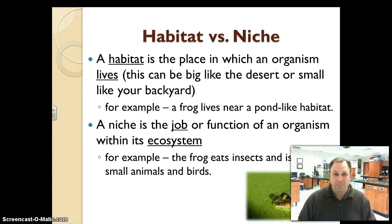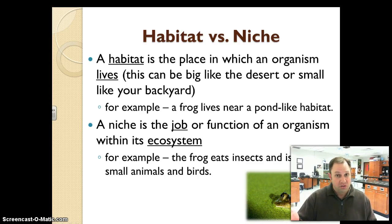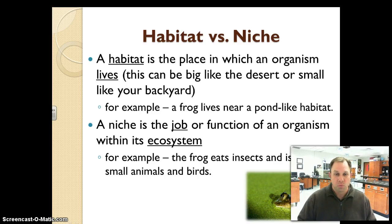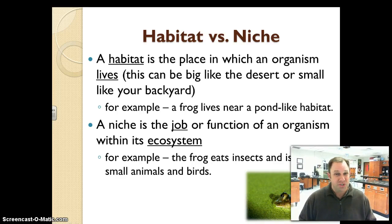So habitat versus niche. This has been part one of this video. In part one, we covered biomes and the different types: tundra, coniferous forest, deciduous forest, desert, tropical rainforest, and our water biomes — marine, saltwater, freshwater, and brackish. We also talked about the organization of our environment and the levels from ecosystem down to individual organism, and lastly habitat versus niche. A lot of vocabulary here, and it's mostly about remembering how all that vocabulary works together.